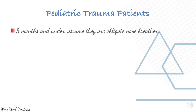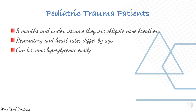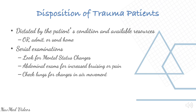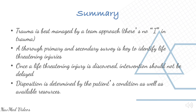Pediatric trauma patients are also very important. Five months and under, assume they are obligate nose breathers. Respiratory and heart rate differs by age. Children can become hypoglycemic easily and can maintain a normal blood pressure for much longer than adults, so blood pressure is not a reliable indicator of shock. Disposition of trauma patients is dictated by the patient's condition and available resources. Perform serial examinations — look for mental changes, abdominal changes in bruising or pain, and changes in air movement in the lungs. In summary, trauma is best managed by a team approach. A thorough primary and secondary survey is key to identify life-threatening injuries. Once a life-threatening injury is discovered, intervention should not be delayed. Disposition is determined by the patient's condition and available resources.